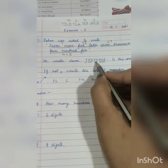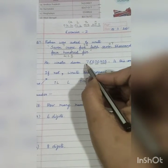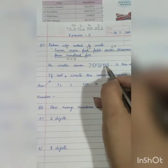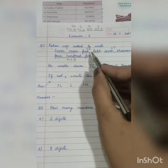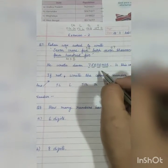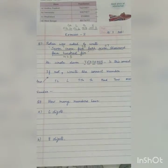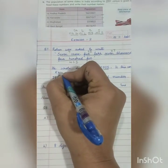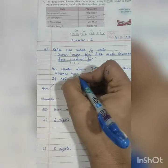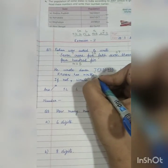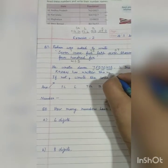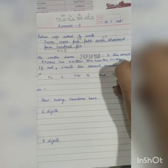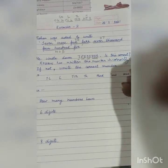Now let's see this number: 7 crore, 50 lakh 70 thousand 405. He has not written it correctly. The number which he wrote is incorrect, okay?